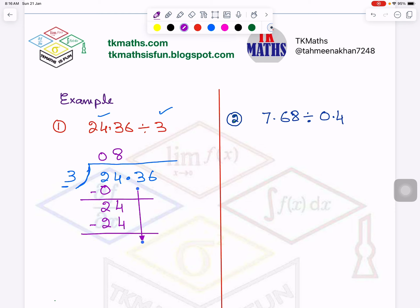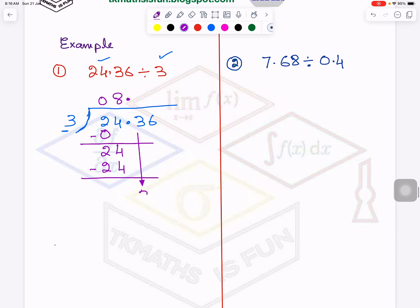But before that, what is there? Decimal. So before bringing down, decimal will be written here. Now you can say 3 times 1 is 3. Minus. And now you will bring 6 down here. Because 3 minus 3 is 0. Either you write or you don't write. Doesn't matter.